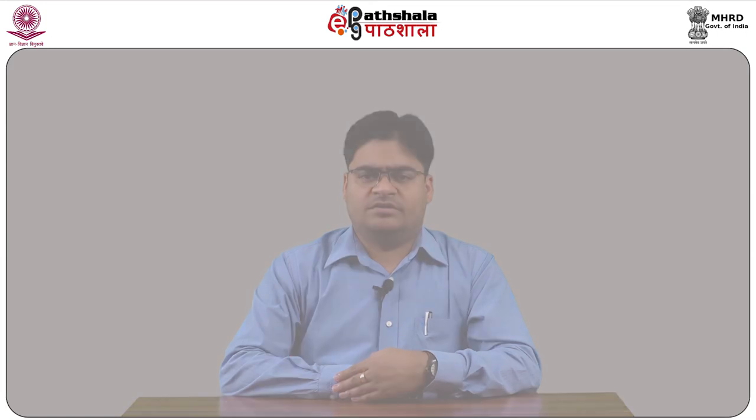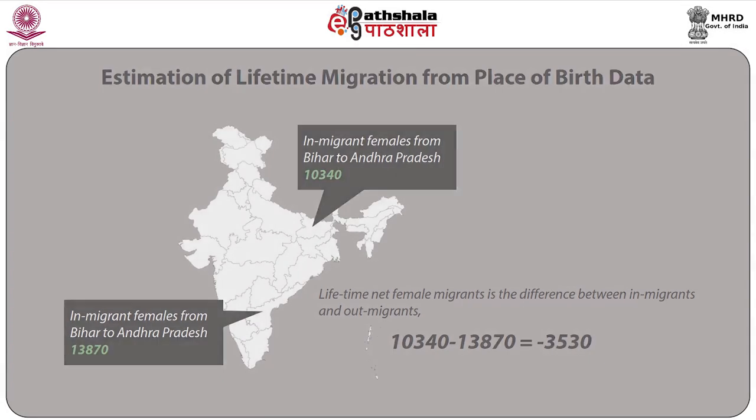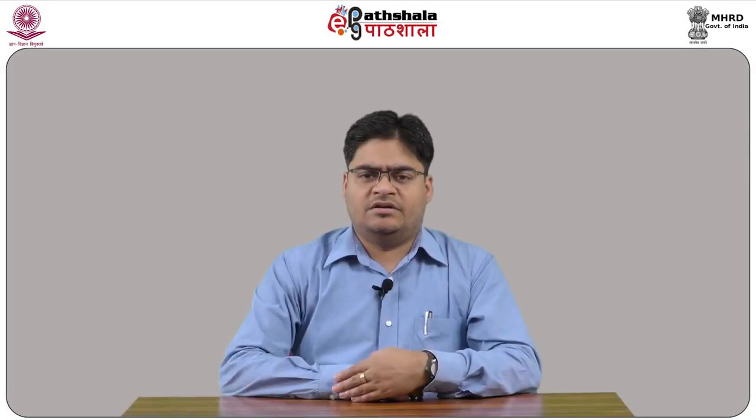For example, lifetime net migration in Bihar is minus 3,092 — that means Bihar has a loss of 3,092 migrants; Bihar has more out-migrants to Andhra Pradesh than in-migrants. On the other hand, net migration from Uttar Pradesh is positive.